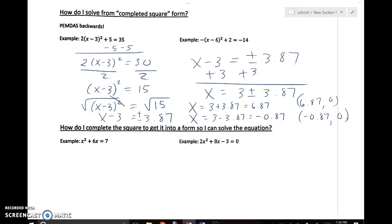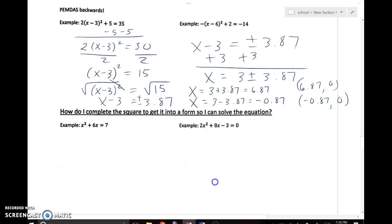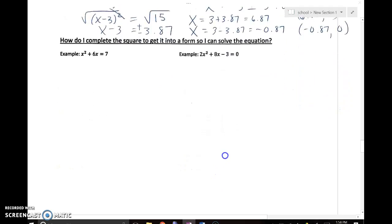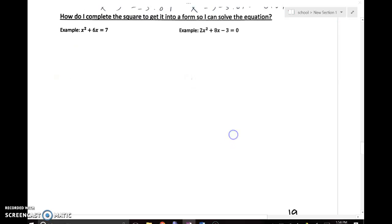Now I want to be able to put something into vertex form using completing the square. This idea of completing the square helps me go from standard form to vertex form. We're going to use the example on the left to set this up, and then we'll come back and do the example on the right second.